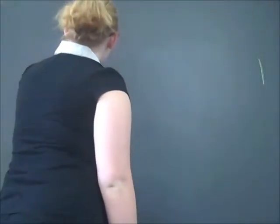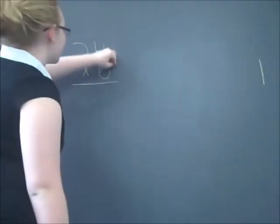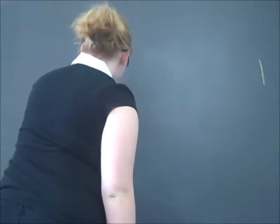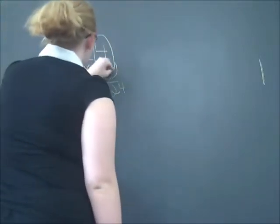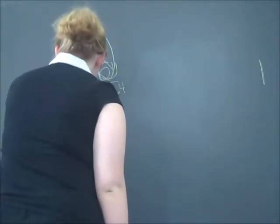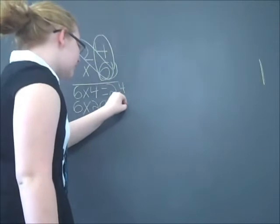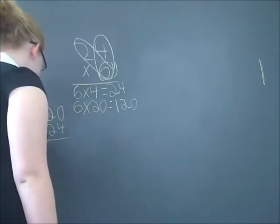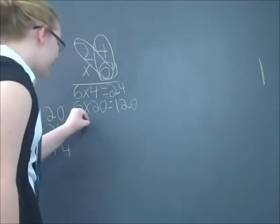Hello, my name is Melissa. Another example would be 24 times 6. First, you circle the 6 and the 4. And then you write the equation down here. Then you circle the 6 and the 2. The 2 is actually a 20. So you add it all up. And you've got your answer: 144.